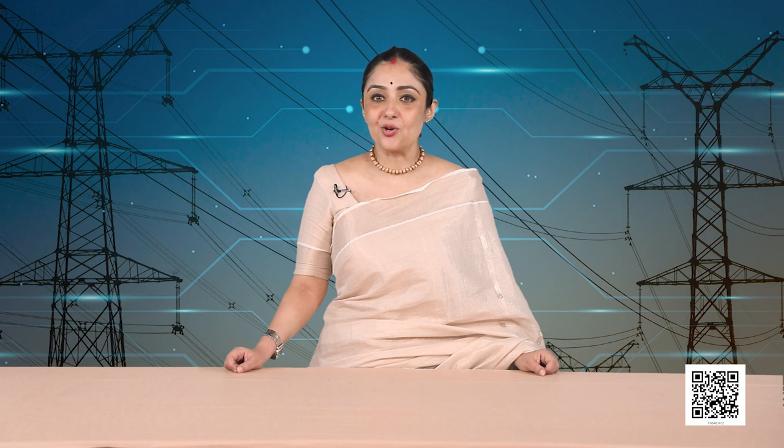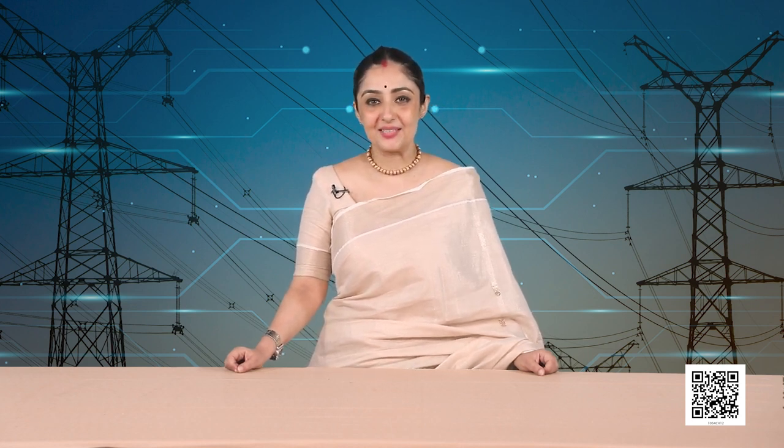We know that a battery or a cell is a source of electrical energy. The chemical reaction within the cell generates the potential difference between its two terminals that sets the electrons in motion to flow the current through a resistor or a system of resistors connected to the battery. To maintain the current, the source has to keep on expending its energy.